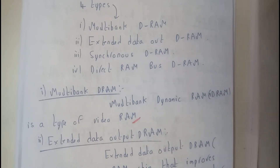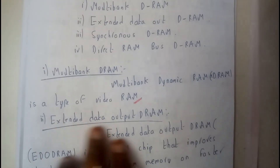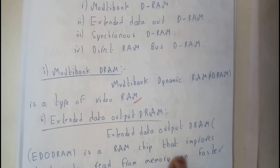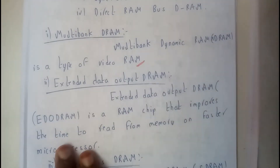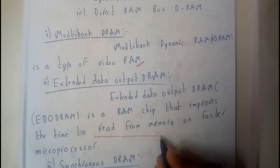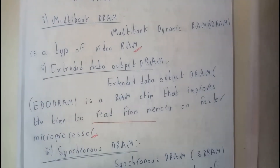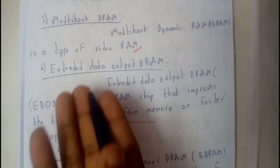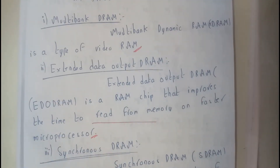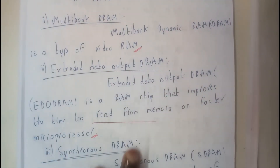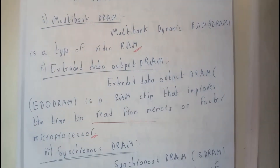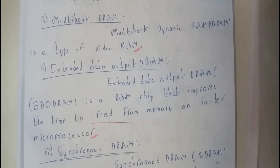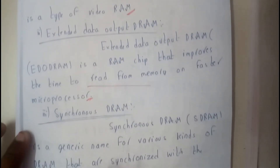Extended Data Out RAM improves the time to read from memory on a faster microprocessor. For example, if our microprocessor is an i5, we can use this RAM effectively. If we have an i7, which is a more advanced version, it will be even more compatible, since this RAM can perform read operations very fast.